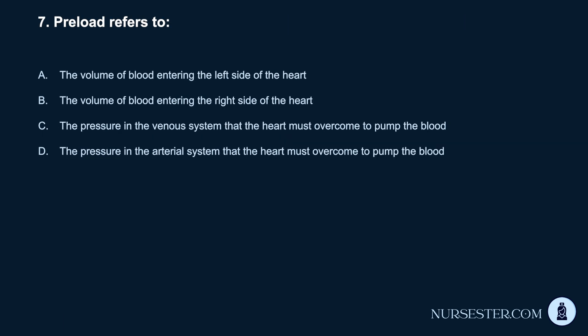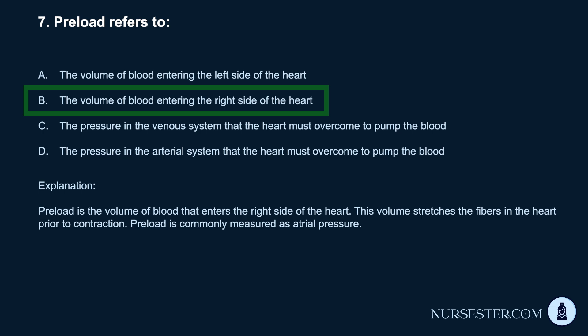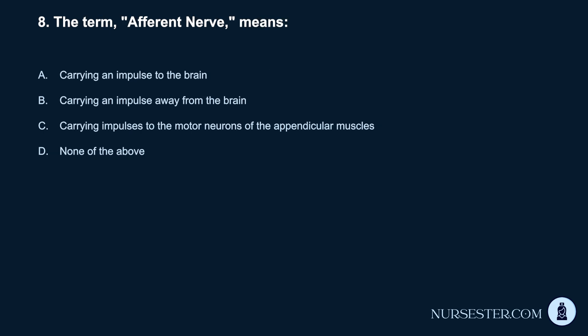Question 7. Preload refers to: a. The volume of blood entering the left side of the heart. b. The volume of blood entering the right side of the heart. c. The pressure in the venous system that the heart must overcome to pump blood. d. The pressure in the arterial system that the heart must overcome to pump blood. Correct answer: b. The volume of blood entering the right side of the heart. Preload is the volume of blood that enters the right side of the heart. This volume stretches the fibers in the heart prior to contraction. Preload is commonly measured as atrial pressure.